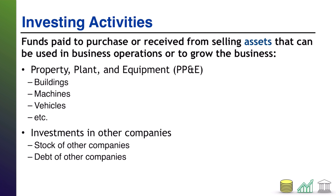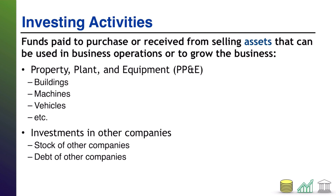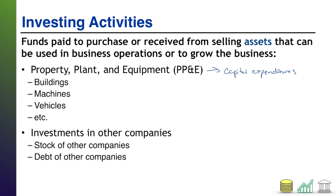Investing activities primarily refer to PP&E — property, plant, and equipment — your fixed assets. Buying those fixed assets to expand your business or selling those assets, it doesn't matter whether you're buying or selling; the cash in or cash out is all related to this investing activity. A lot of times you'll see these classified on statements of cash flows as capital expenditures. So buildings, machines, vehicles, land — all the things you need to physically grow your business are investing activities.